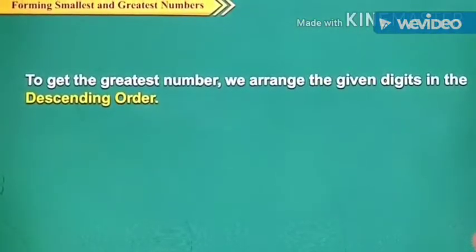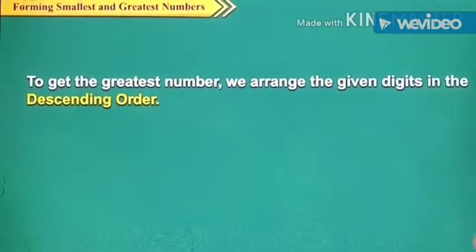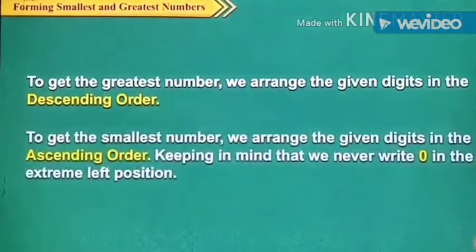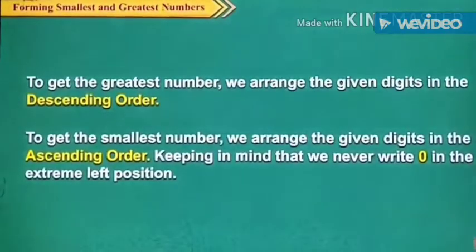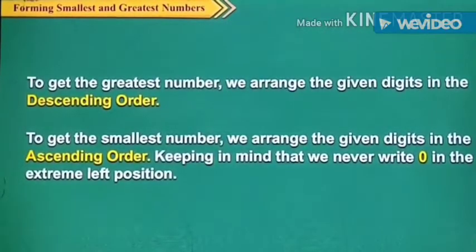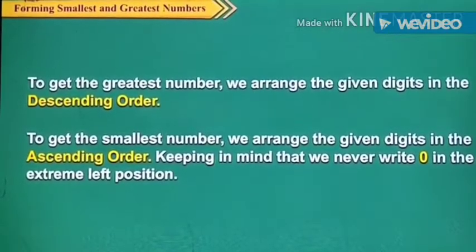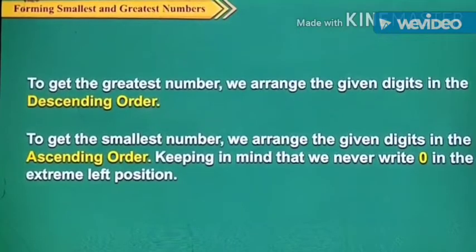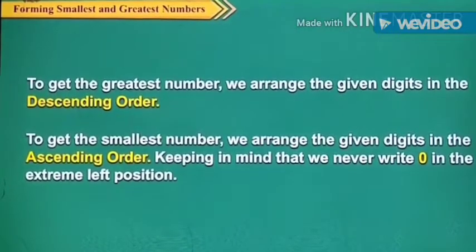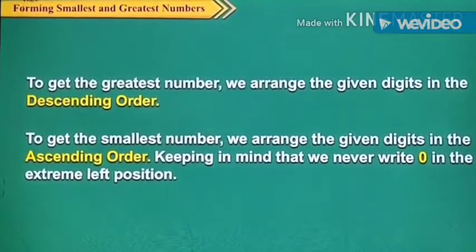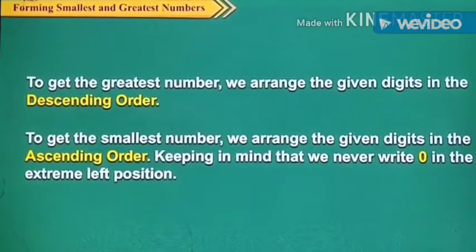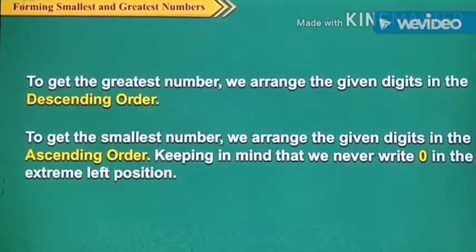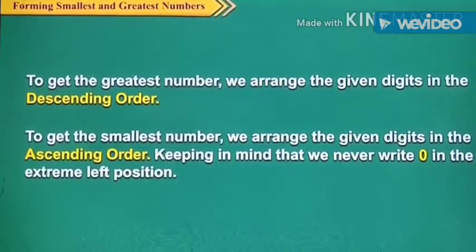To get the greatest number, we arrange the given digits in descending order. To get the smallest number, we arrange the given digits in ascending order, keeping in mind that we never write 0 in the extreme left position.